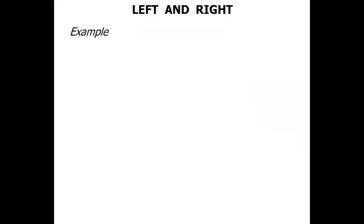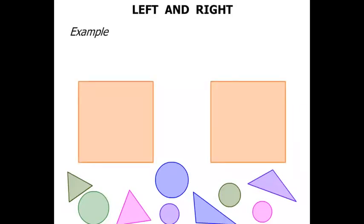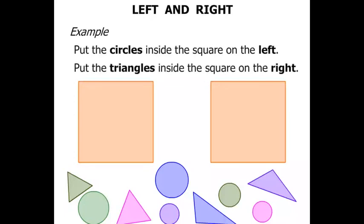Let's look at an example now. We've got a bunch of triangles and circles, and two squares. Put the circles inside the square on the left. And put the triangles inside the square on the right.